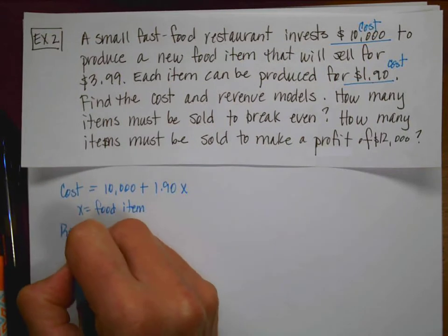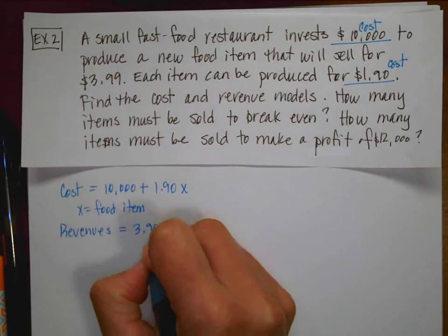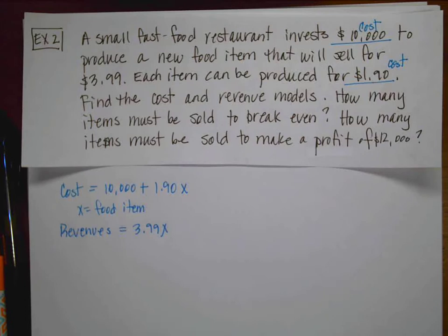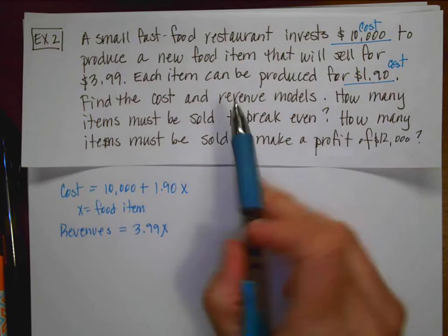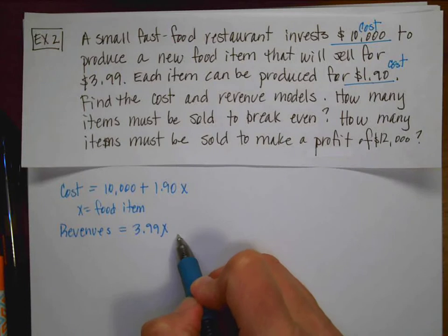All righty. And then my revenue, how I make money, is going to equal 3.99 times X. So the first question said, find your cost and revenue models. Here they are.